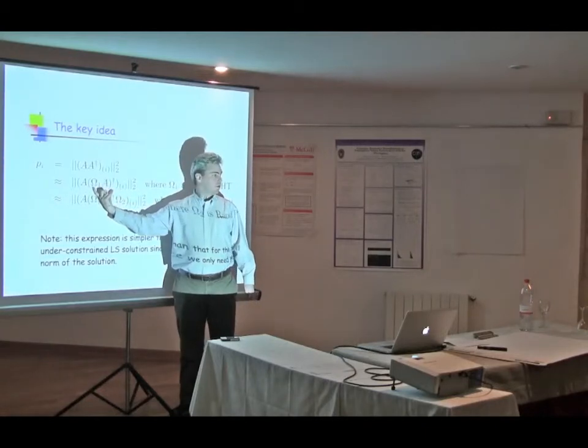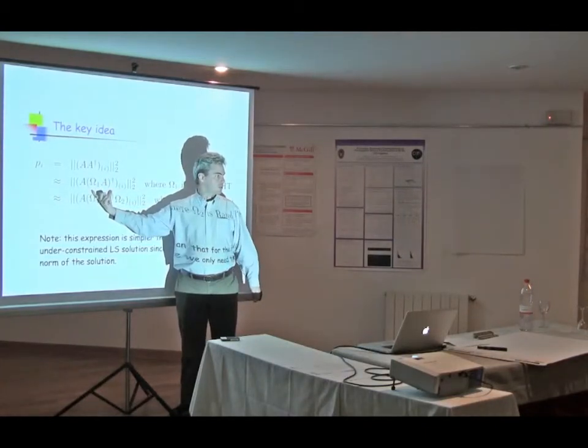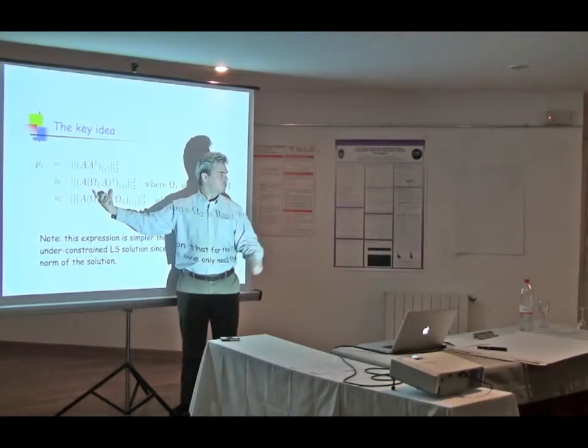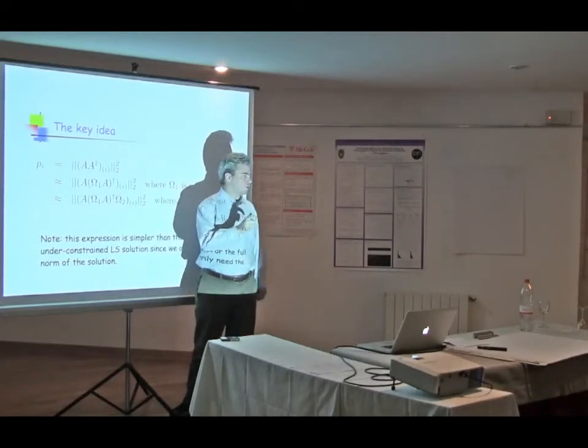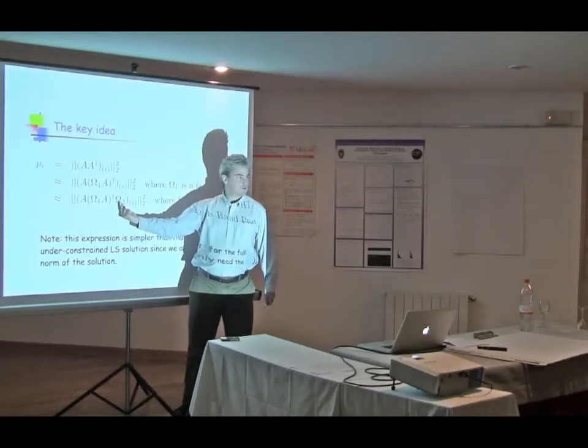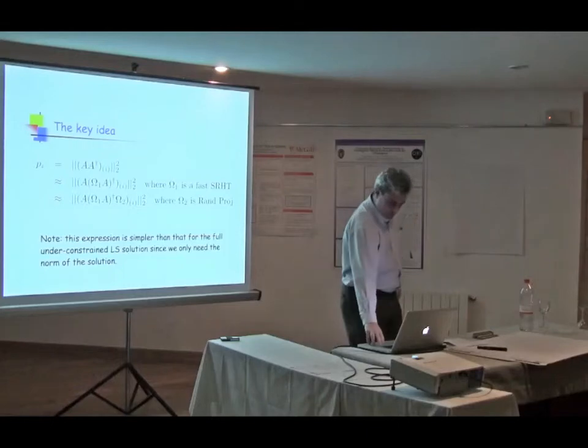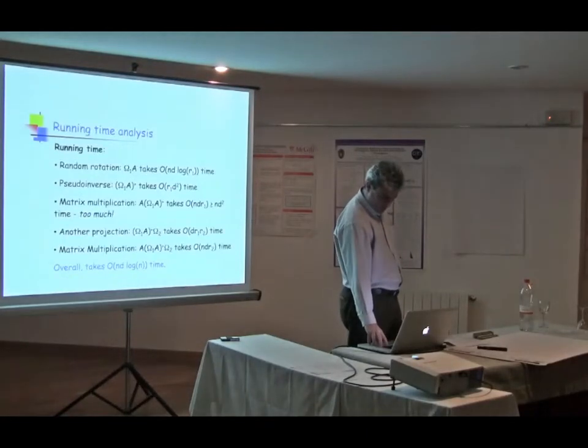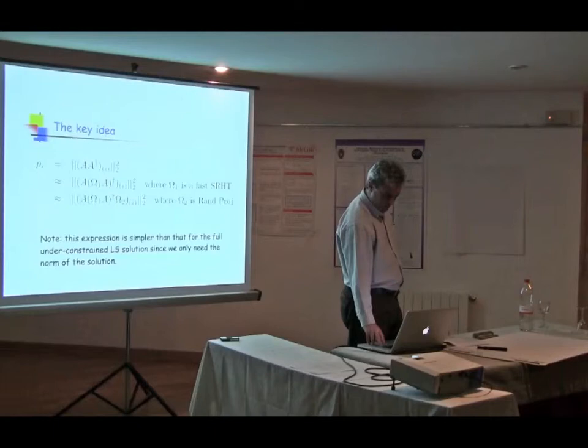And I'm done. I do QR not on A, but on the projected version of A. And I post-multiply A with R inverse for the projected problem. And I'm almost done. I get an almost orthogonal matrix. In fact, I need to put a second projection in there to make everything fast.